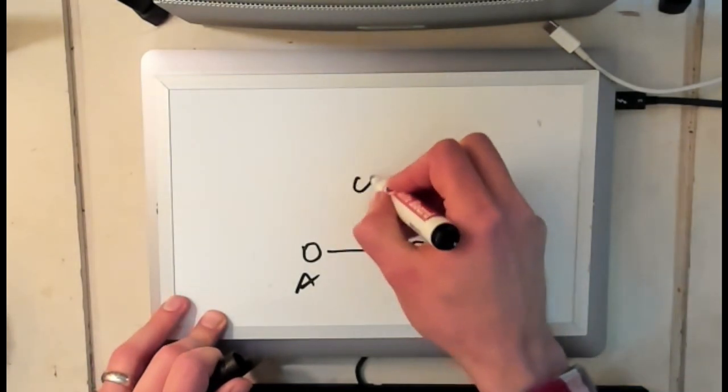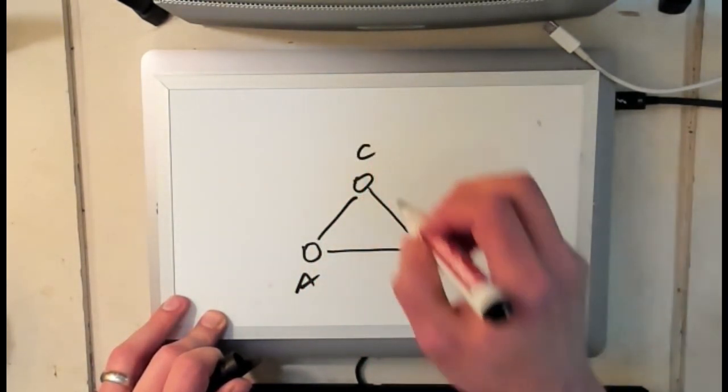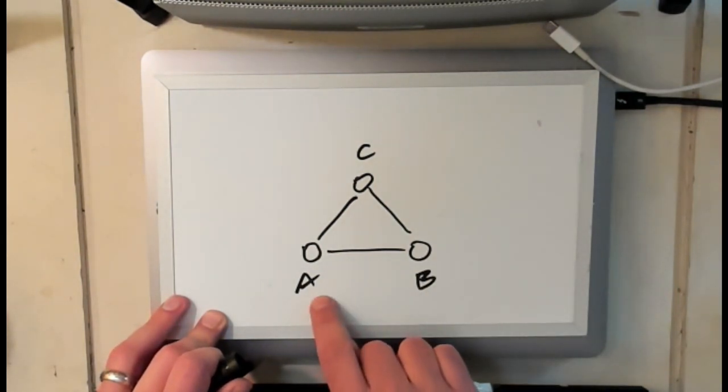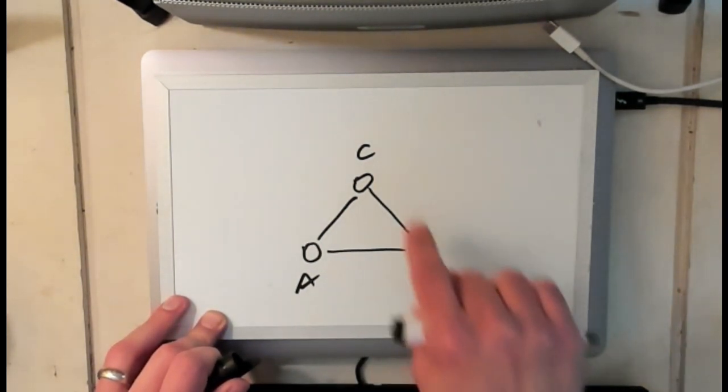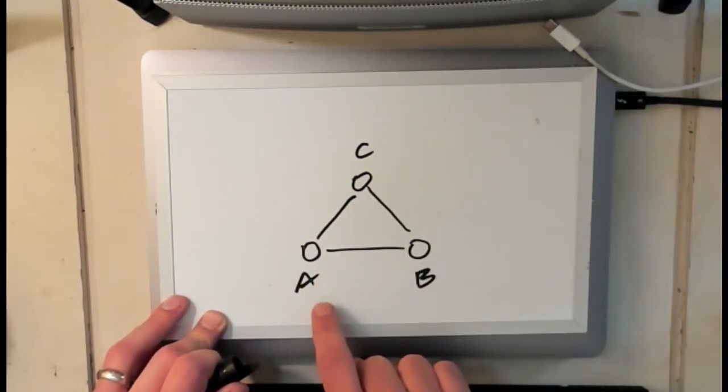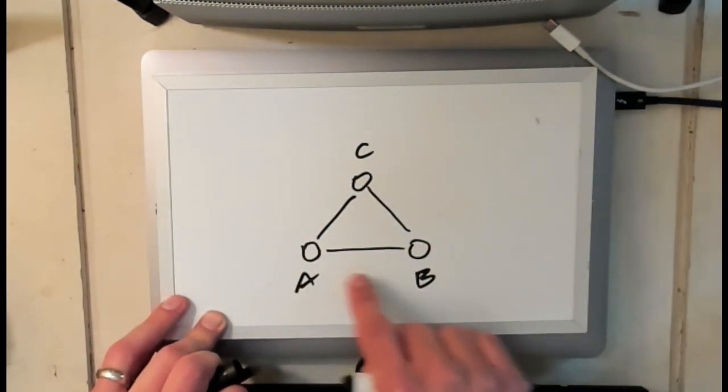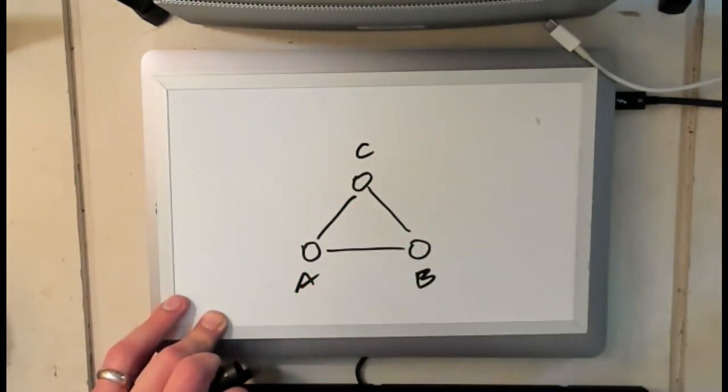So the simplest possible example of a graph that has a cycle actually needs to have at least three nodes. Because now I can get back to A by going from A to B to C and back to A. And you'll see if I do this, this cycle from A to B to C back to A uses all three edges in the graph, but it never reuses an edge. So this represents a cycle in this graph.